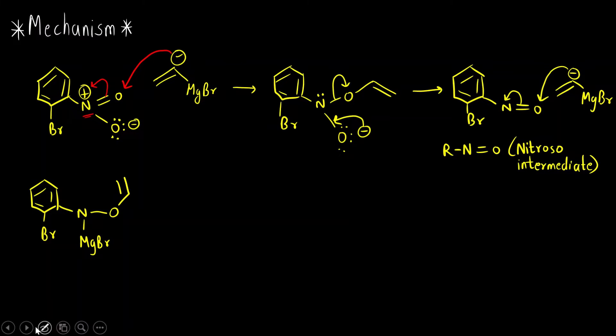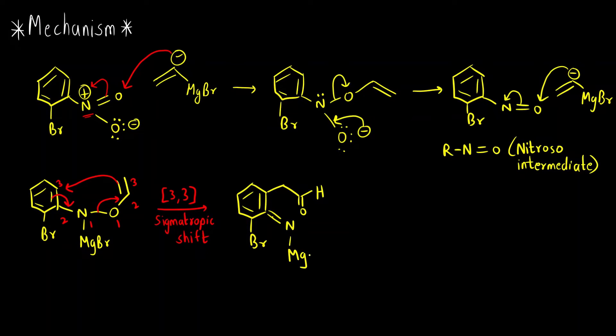Okay, now the next step is we can do a 3,3-sigmatropic shift, that is a sigmatropic rearrangement. 3,3-sigmatropic shift. How can we do the numbering? One two three, one two three. So new bond is formed between three and three. This pi bond will come here. And this will go here. So what do we get is benzene ring Br. Here we have CH2. Then we have C double bond OH. And here there is double bond N equals N-MgBr.